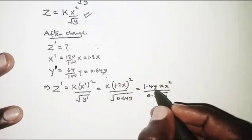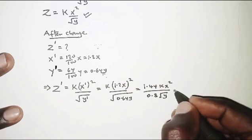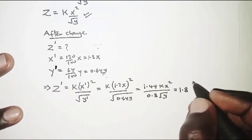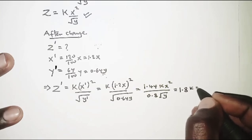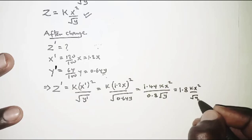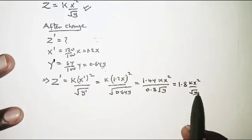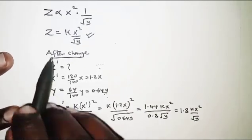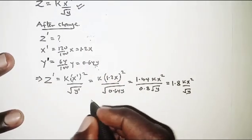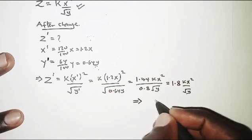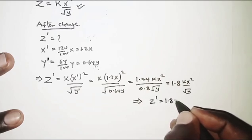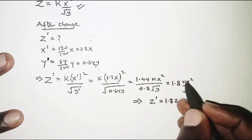So 1.44 divided by 0.8, that should be 1.8, k x squared over root y. And remember k x squared over root y we already have it up here as z, so for simplicity we can say that z prime is equal to 1.8z.